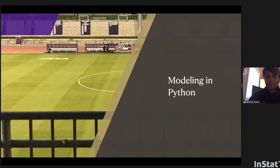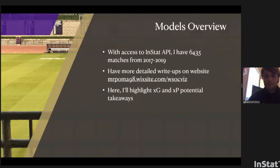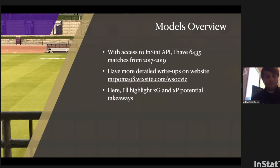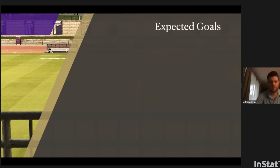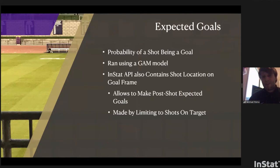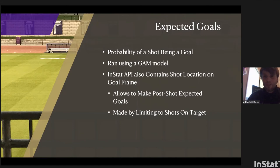I'm going to walk through some of the modeling in Python. Through the Instat API access I've accessed the past three seasons, which contains over 6,400 games. I'll quickly highlight expected goals and expected passes with potential takeaways. Expected goals is simply the probability of a shot becoming a goal — I run this using a logistic GAM model. The Instat API data also contains shot location on the goal frame, which allows me to make a post-shot expected goals model as well, giving extra information I can share with the coaching staff or team.